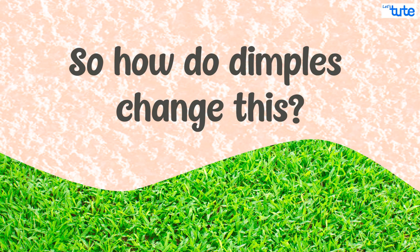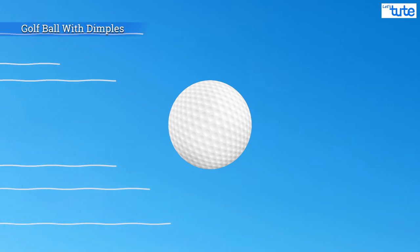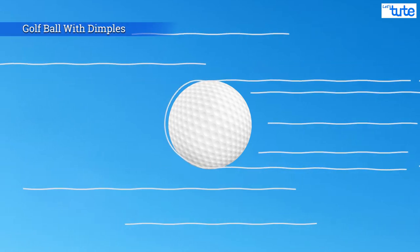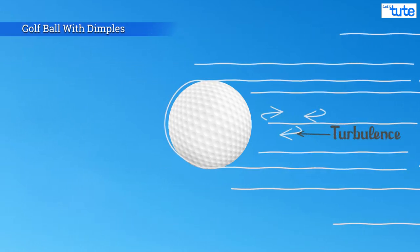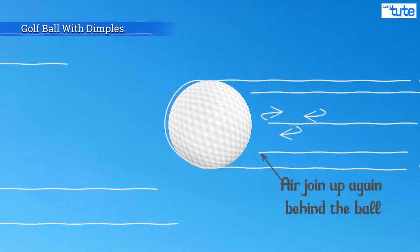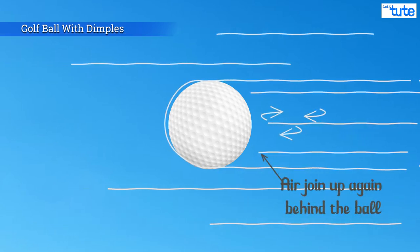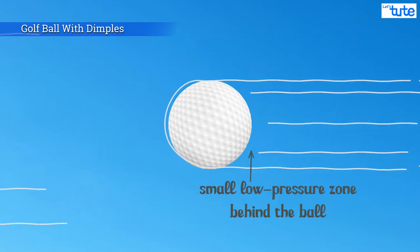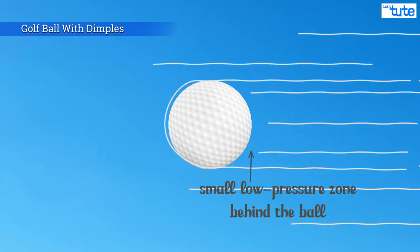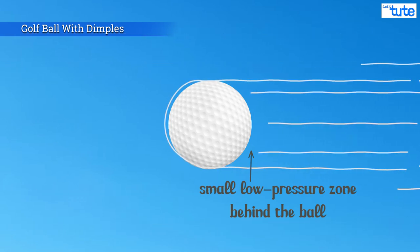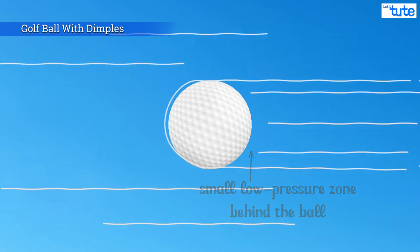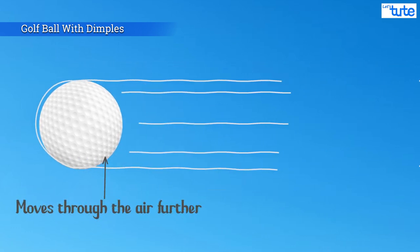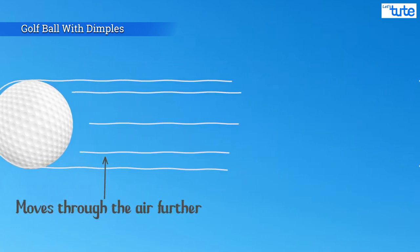So how do dimples change this? When air goes around a dimpled ball, it slows down and causes turbulence. This makes the air join up again behind the ball. This still causes a low pressure zone behind the ball, but a small one. Thus it causes the ball to not slow down that much, and the dimpled ball moves through the air further when compared to a smooth ball.